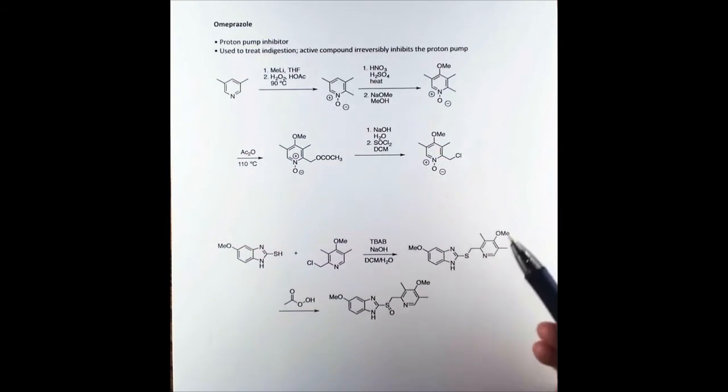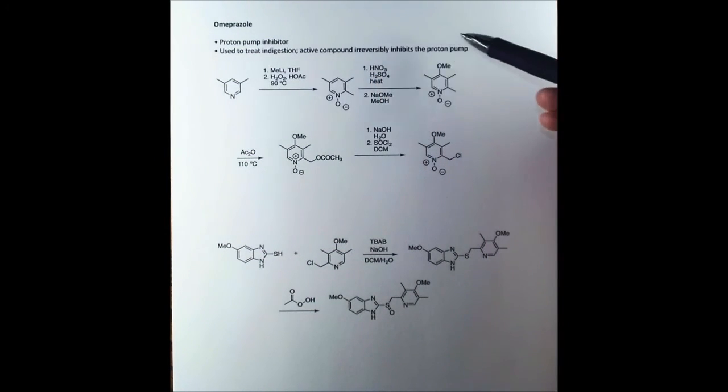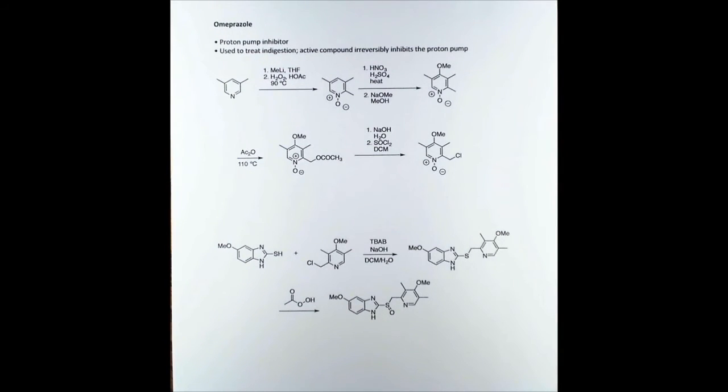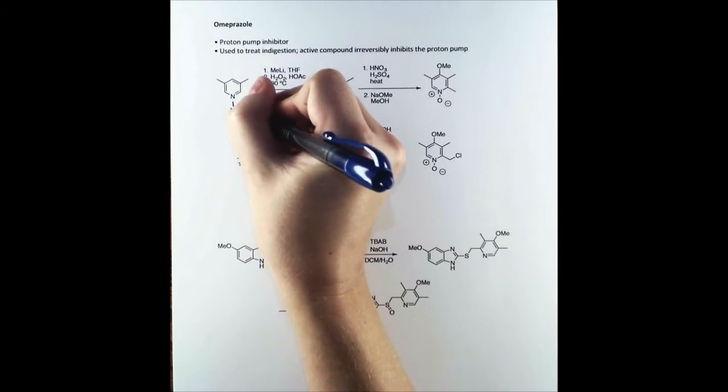Omeprazole, shown here, is a proton pump inhibitor. It's used to treat indigestion, and it's a really interesting process. It actually goes undetected through your system until it finds its way to the parietal cells of the stomach, where the acidic environment causes it to convert into an active form, and then it will inhibit the proton pump in the stomach irreversibly, reducing acid. The synthesis is really cool.